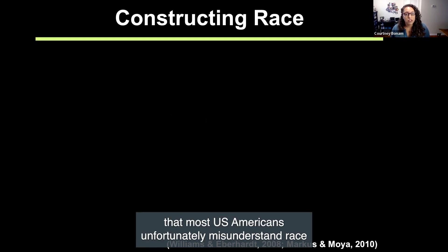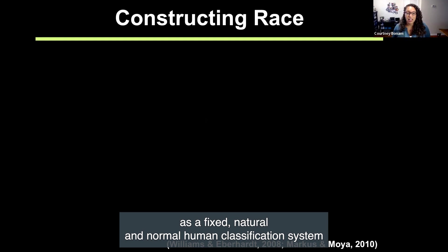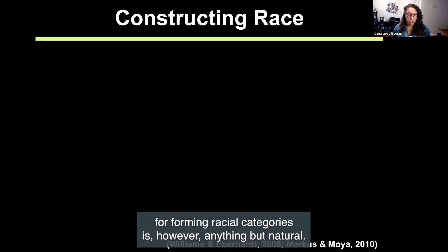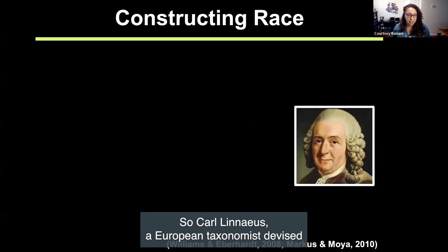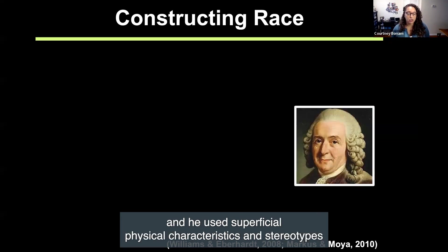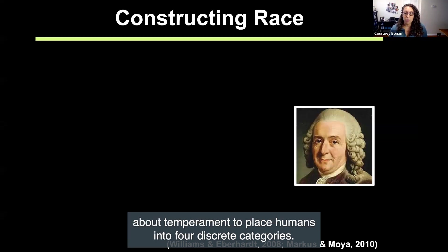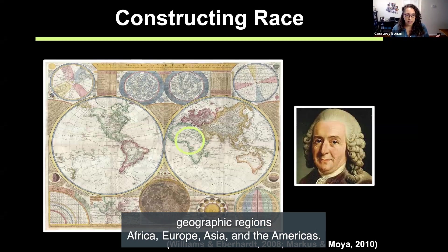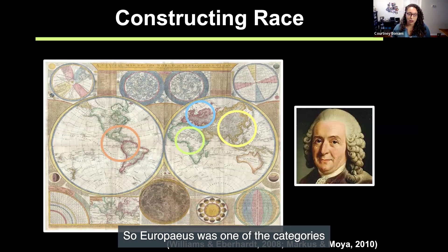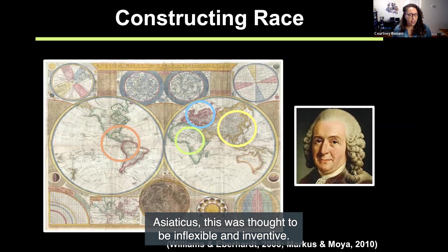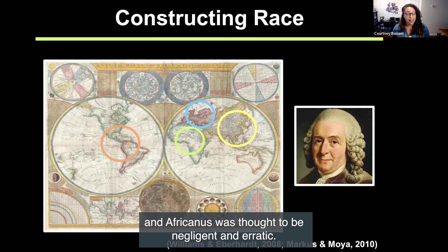Social science research shows that most U.S. Americans unfortunately misunderstand race as a fixed, natural, and normal human classification system rooted in biology and genetics. The basis for forming racial categories is anything but natural. Carl Linnaeus, a European taxonomist, devised race as a human classification system in the 1700s, using superficial physical characteristics and stereotypes about temperament to place humans into four discrete categories roughly aligned with the four largest geographic regions: Africa, Europe, Asia, and the Americas. Europeus members were thought to be haughty and opinionated; Asiaticus, inflexible and inventive; Americanus, tenacious and free; and Afer, negligent and erratic.